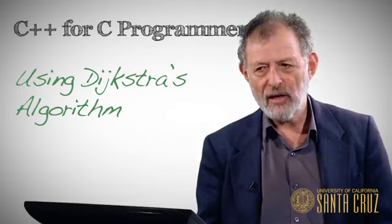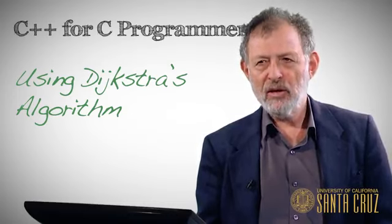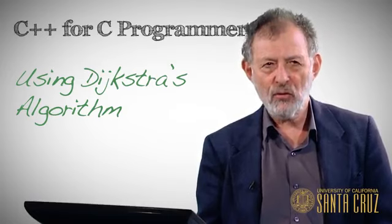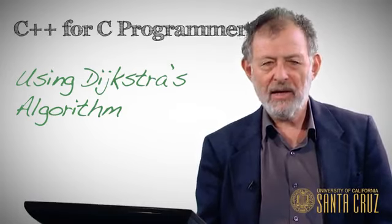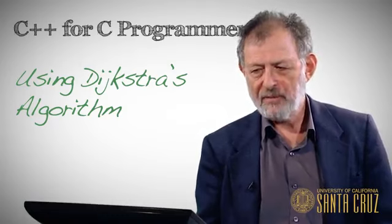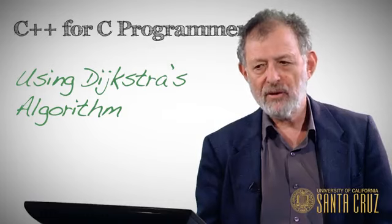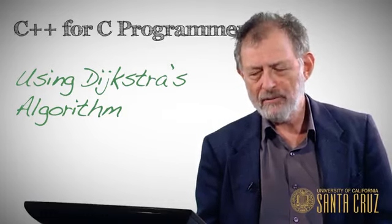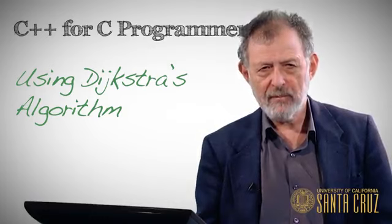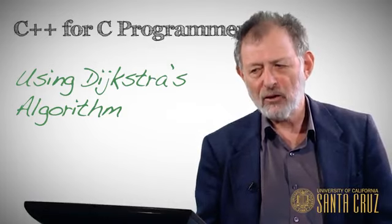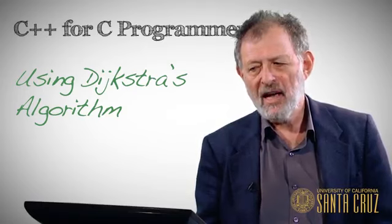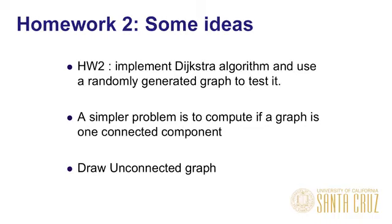But also it gives you some background in doing further and more complicated programs as this course and its sequel progresses. One of the classic algorithms in computational graph theory was invented by the very famous Dutch mathematician computer scientist, Edward Dijkstra. So we're going to see how to use Dijkstra's algorithm and your homework is going to be to implement Dijkstra's algorithm and use it on a randomly generated graph which you'll also have to implement.